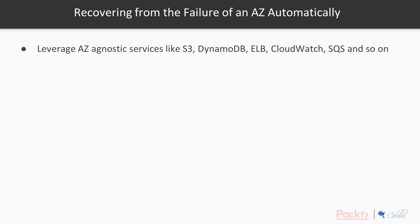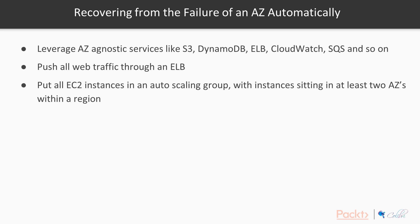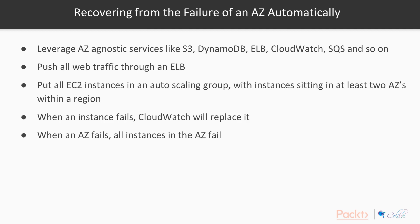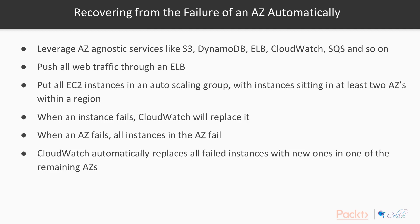To recover from the failure of a data center or availability zone automatically, there are a few things we need to do. Leverage AZ-agnostic services like S3, DynamoDB, the Elastic Load Balancer, CloudWatch, and Simple Queue Service. Push all web traffic through an Elastic Load Balancer. Make sure all EC2 instances are in an autoscaling group with instances sitting in at least two availability zones within a region. That way, if instances in one AZ fail, CloudWatch will automatically replace them with instances in one of the remaining healthy availability zones.